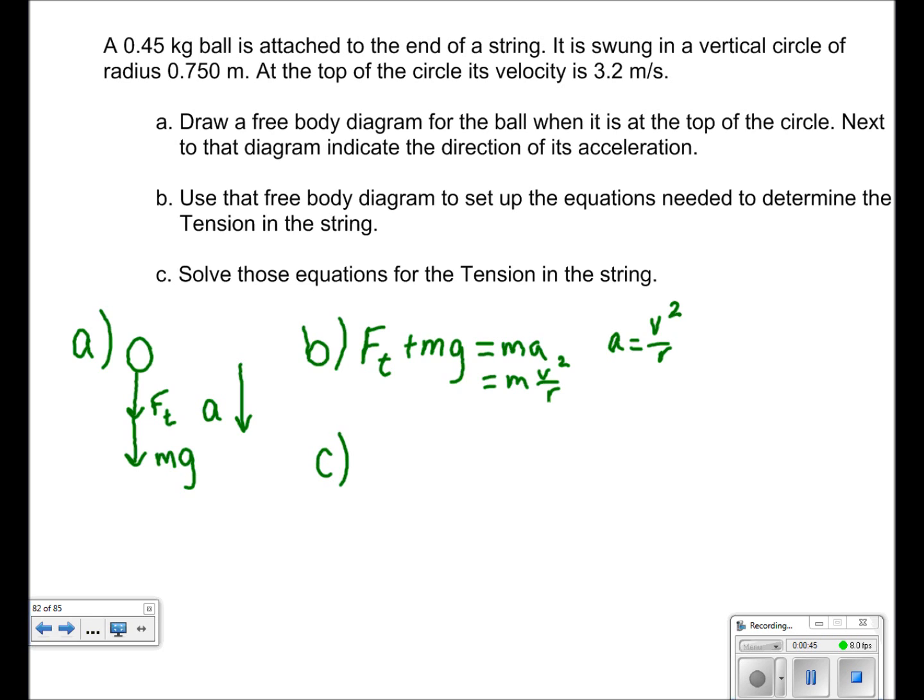In the third part, we are asked to find the tension of the string. We get Ft plus mg is equal to mv squared over r, as we got from part B.